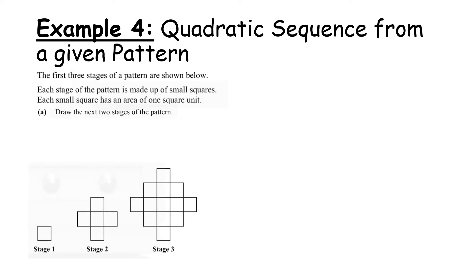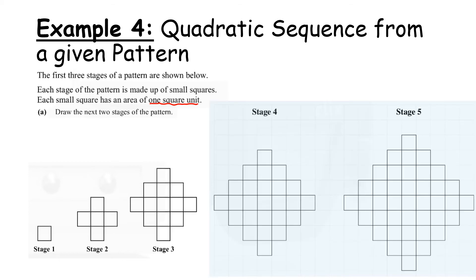Now let's look at getting a quadratic sequence from a given pattern. The first three stages of a pattern are shown — each stage is made up of small squares, and each small square has an area of one square unit. That's very important as the question progresses. It then asks us to draw the next two stages of the pattern.